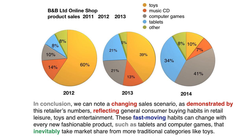To finish off: in conclusion, we can note a changing sales scenario, as demonstrated by this retailer's numbers, reflecting general consumer buying habits in retail, leisure, toys, and entertainment. These fast-moving habits can change with every new fashionable product, such as tablets and computer games, that inevitably take market share from more traditional categories like toys. 'In conclusion' is a great final connecting phrase. 'Fast-moving' is a compound adjective, hyphenated. And 'inevitably' is a great adverb to describe something which is almost certain to happen.